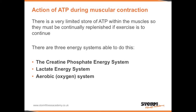There is a very limited store of ATP within the muscles, so they must be continually replenished if exercise is to continue. There are three energy systems able to do this: the creatine phosphate energy system, the lactate energy system, and the aerobic system.